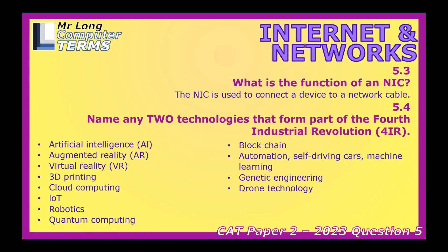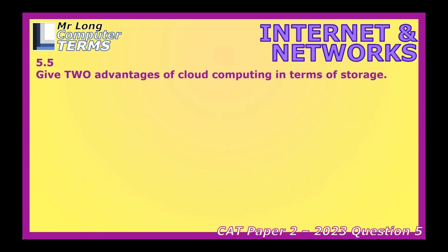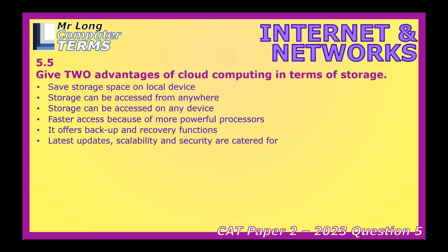Underlying many of these 4IR advancements is cloud computing. Imagine a vast network of servers that store and process data — so instead of relying solely on your phone or laptop, you can access information and applications from anywhere. That's why they call it the cloud: it's everywhere and nowhere at the same time. Think about all the photos, videos, and music on your phone — the cloud gives you a massive amount of space to store all that, solving the problem of running out of storage.